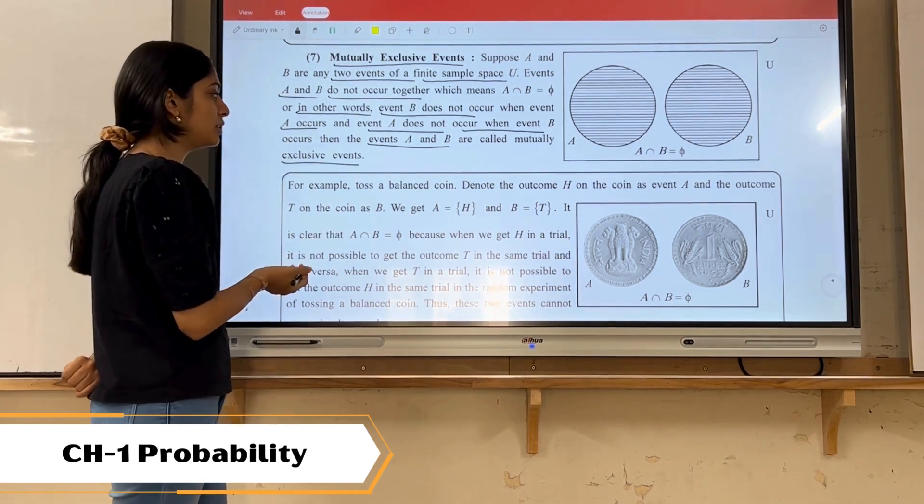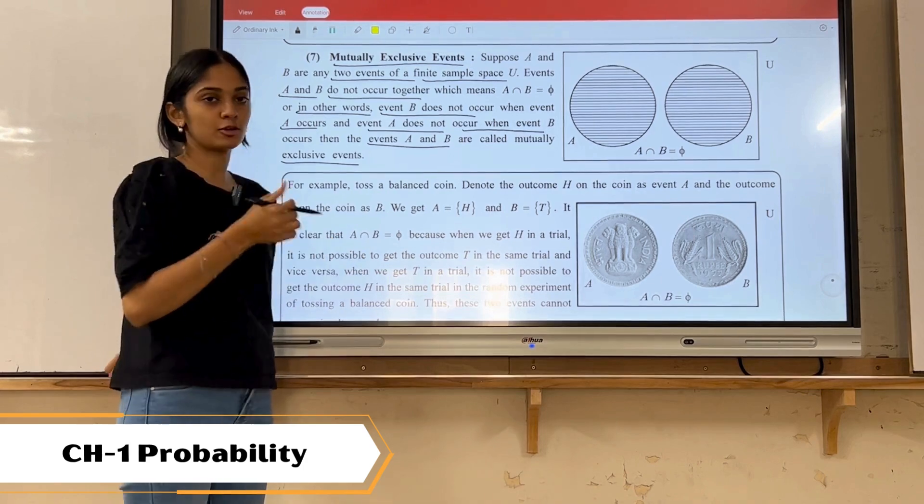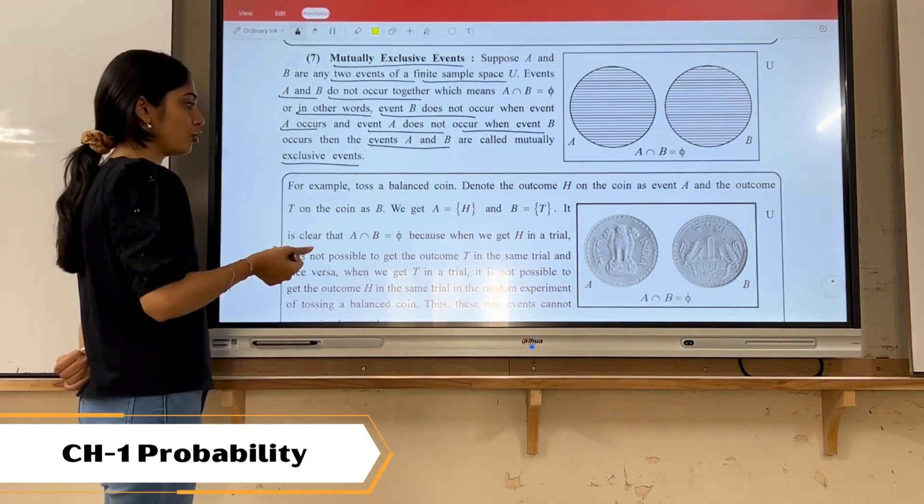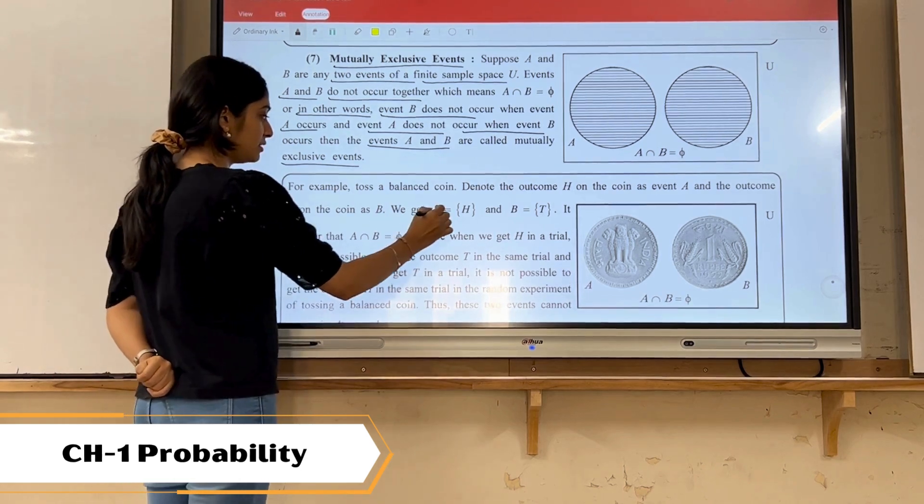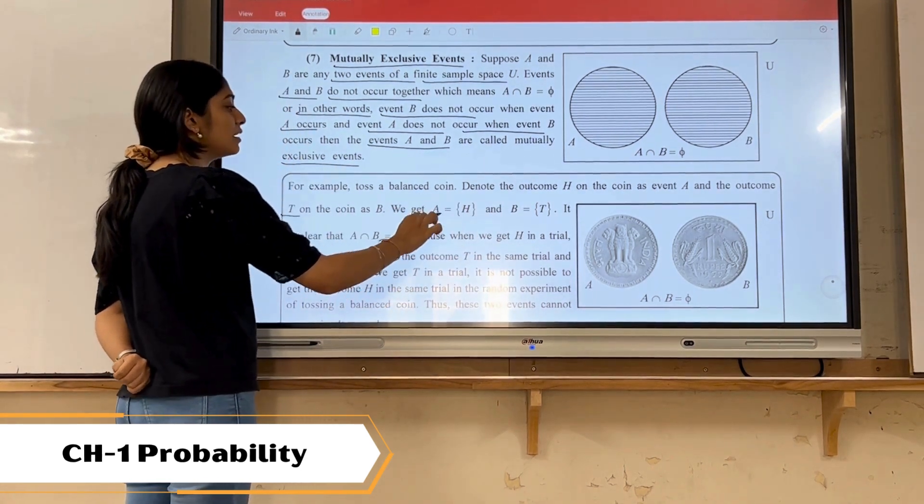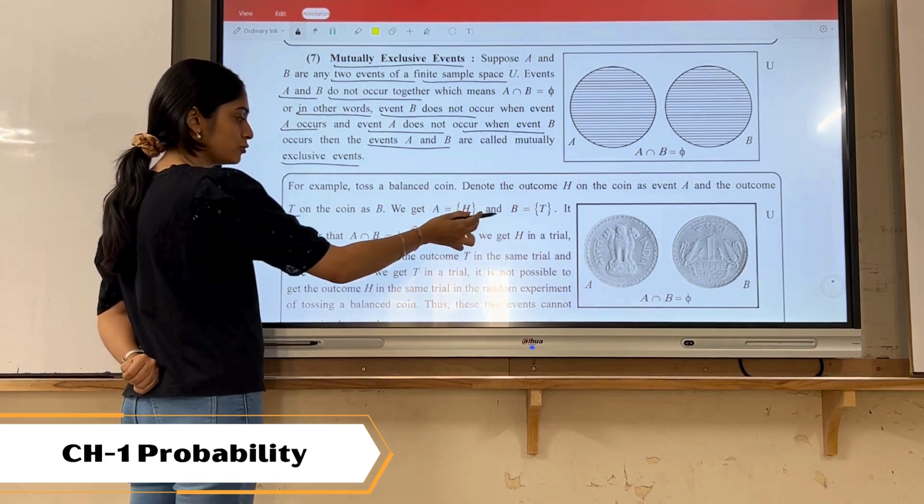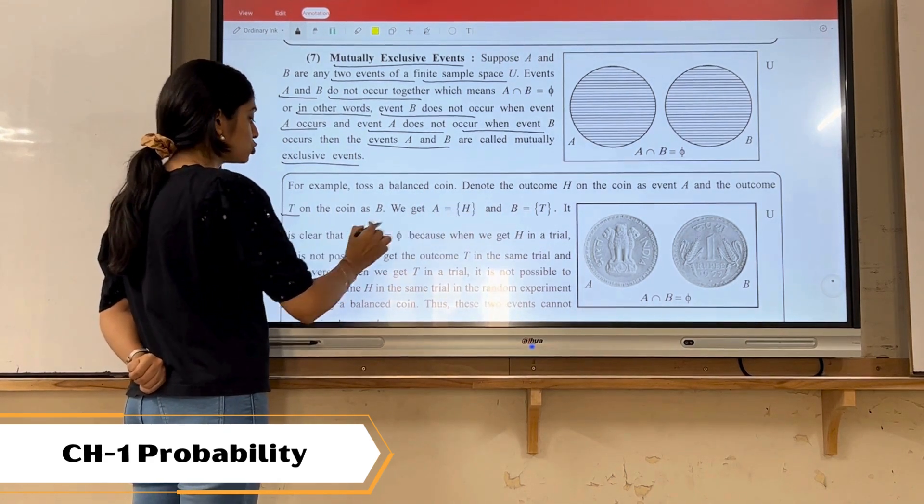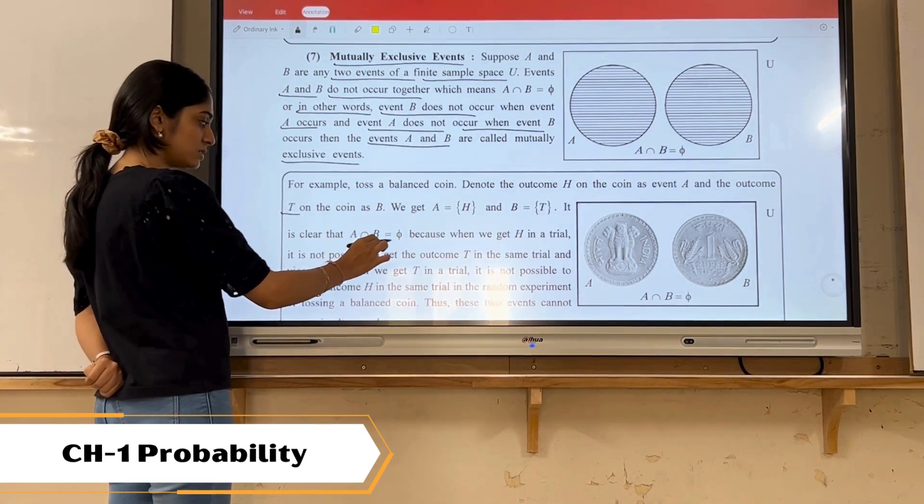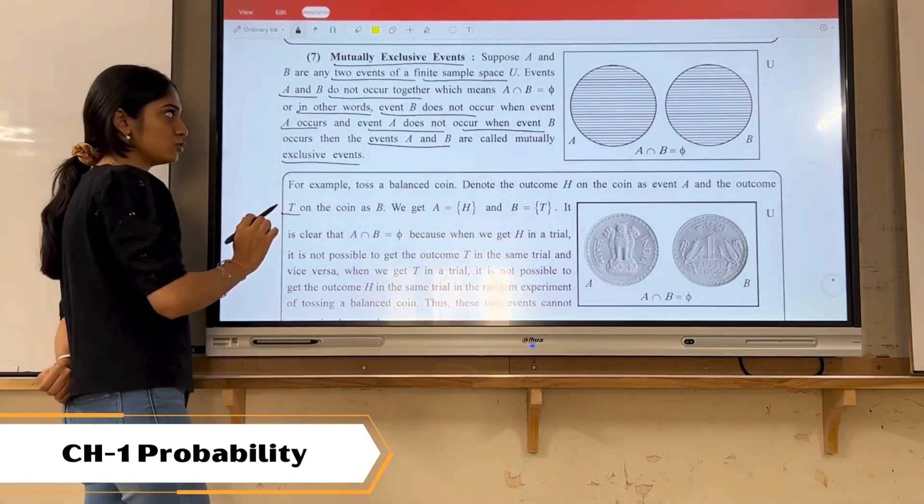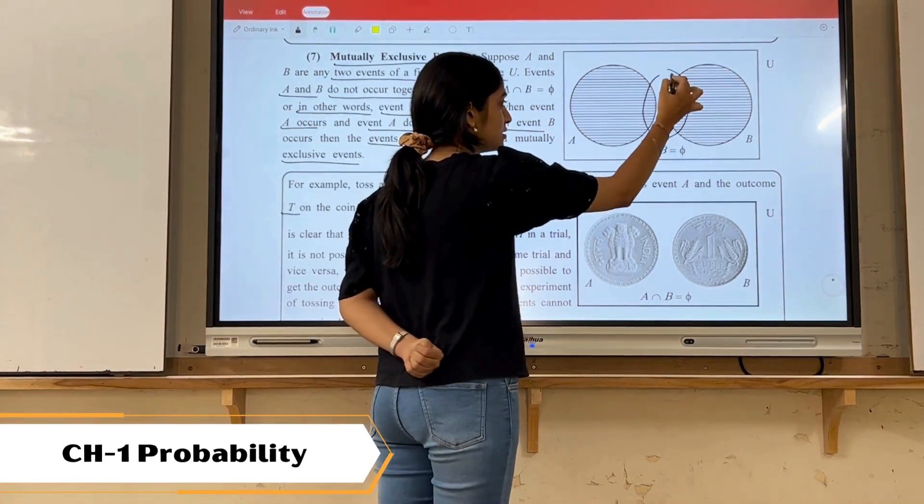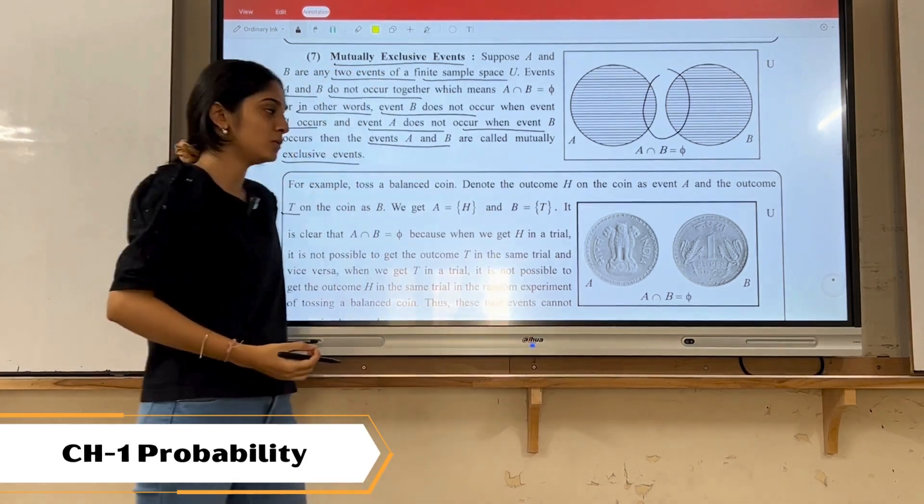For example, event A denotes that if we toss a coin then we get a head, and event B denotes that if we toss a coin we get a tail. Then event A is getting a head, event B is getting a tail. Now there are none of the values which is repeated in A as well as B. So we can say that A intersection B is null set. So whenever the A intersection B is null set, this type of events are termed as mutually exclusive event. This is the Venn diagram. Here we are not having any intersection because this is mutually exclusive event.